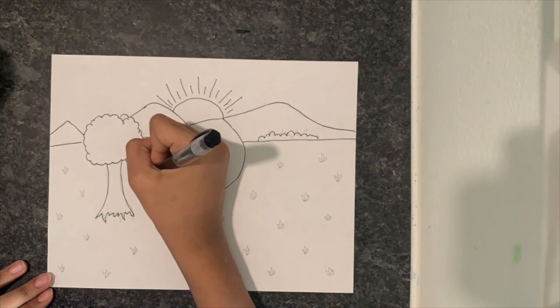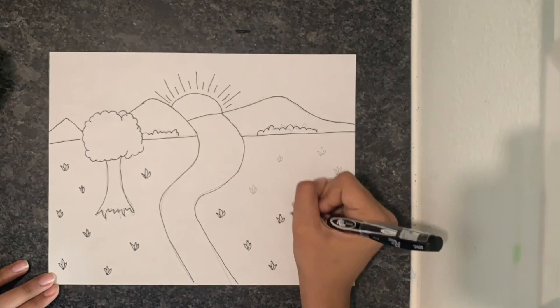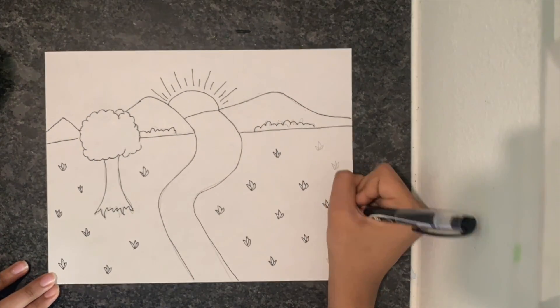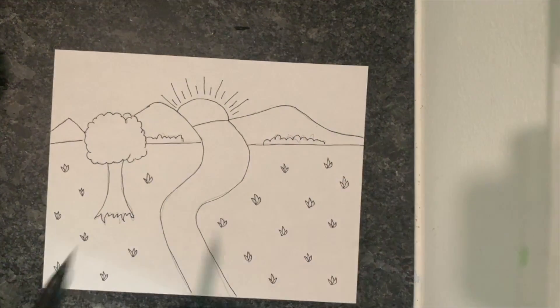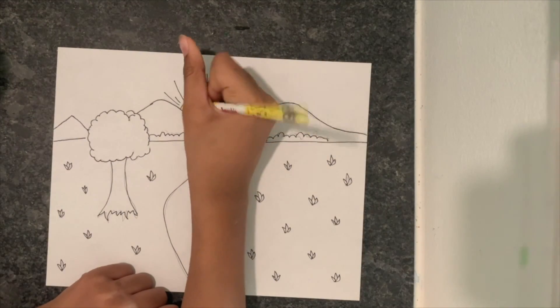Make sure to erase any sort of eraser marks that might be in the way while you're coloring. Now comes the fun part: coloring. To color, I use this bright yellow for the sun.